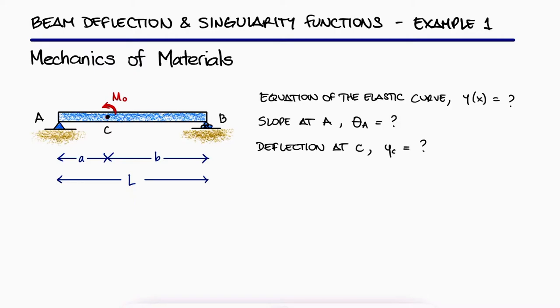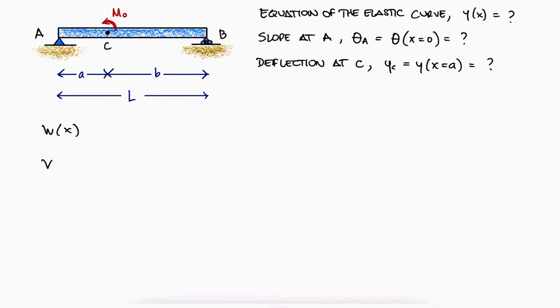The slope at point A will be equal to the slope function evaluated at x equal to 0. The deflection at C will be the equation of the elastic curve evaluated at x equal to A. To get both of these equations, theta and y, we will start by writing the distributed load W function using singularity functions and integrate 4 times.